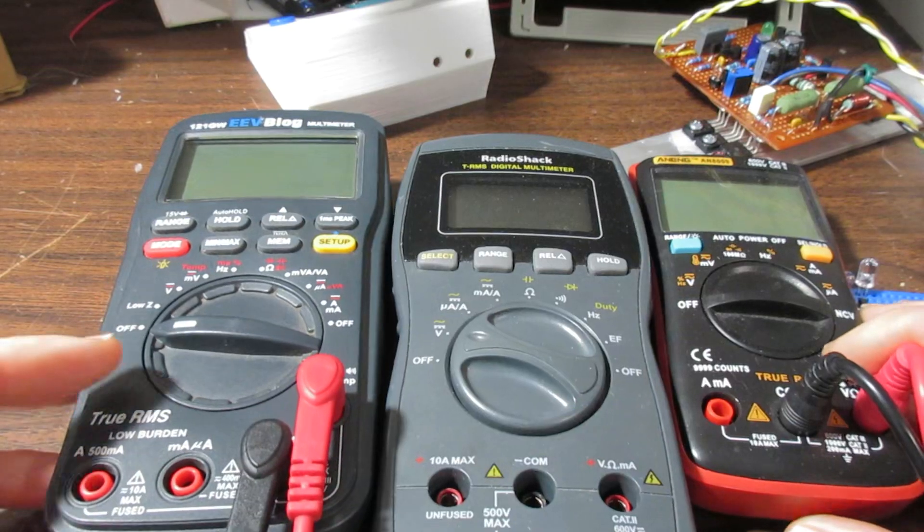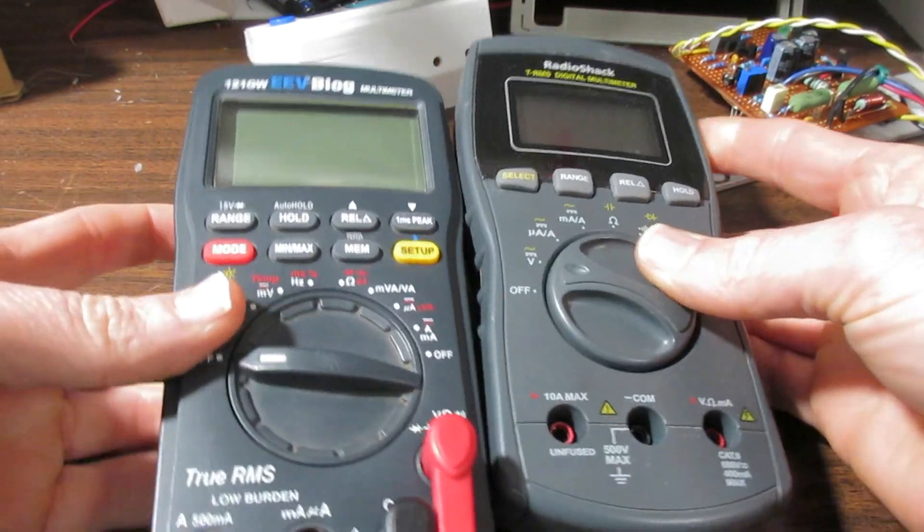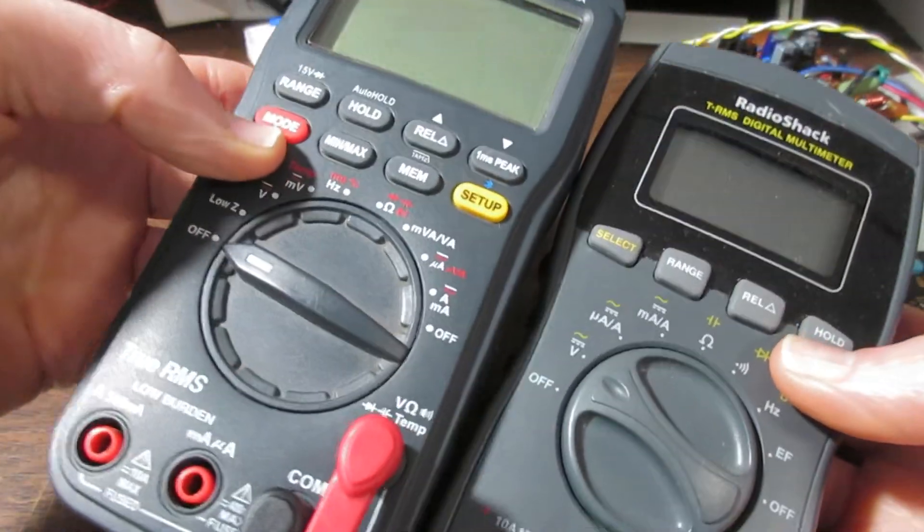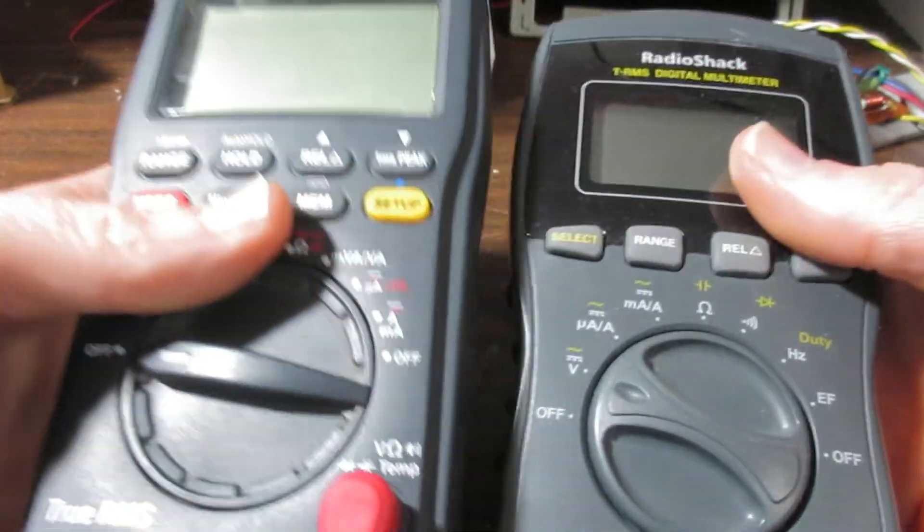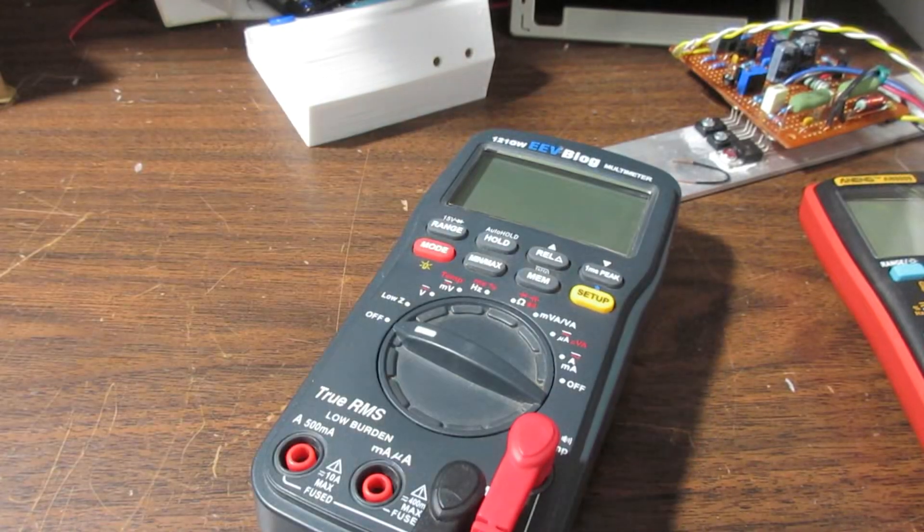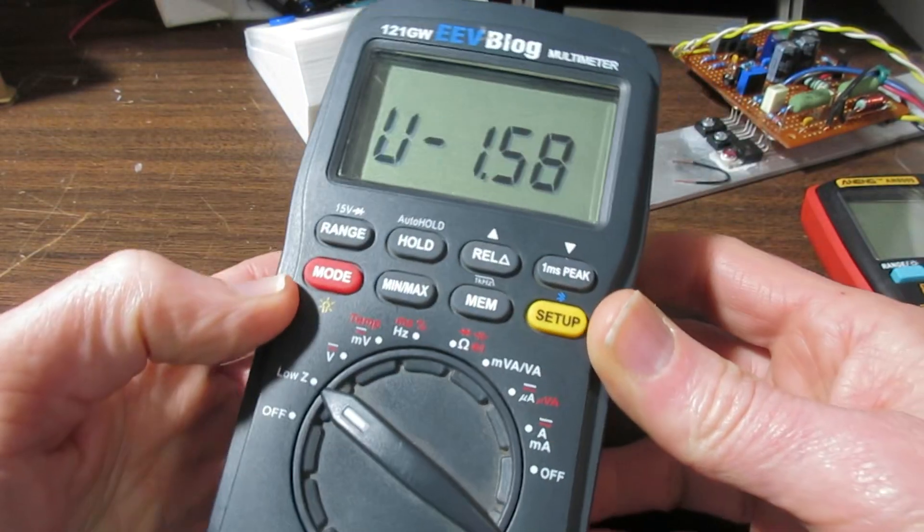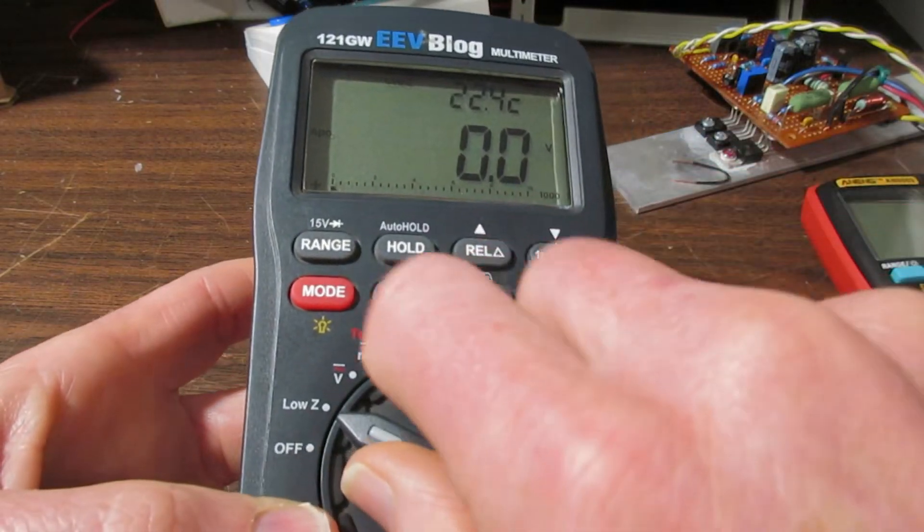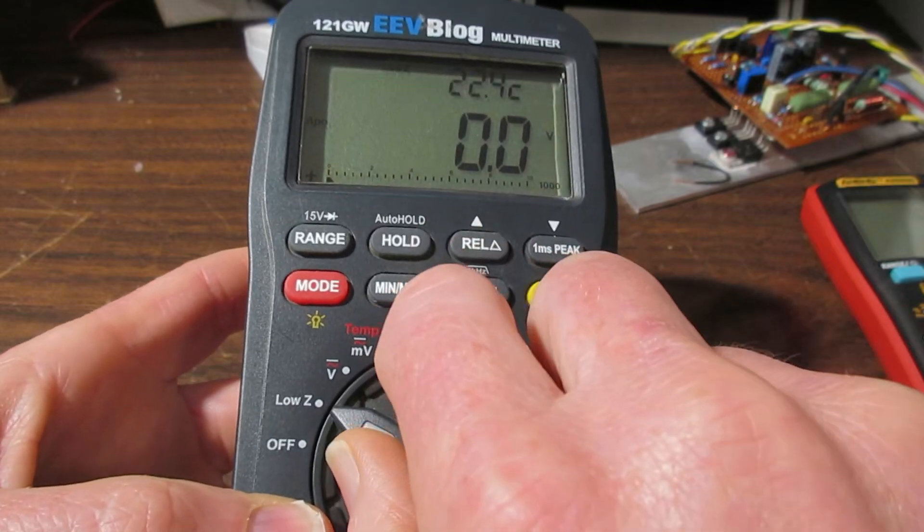Okay, back on the bench. Put some batteries in it. I have the rubber baby buggy bumper removed. It's about the same size as the Radio Shack meter, a lot heavier. Let's see what happens here.